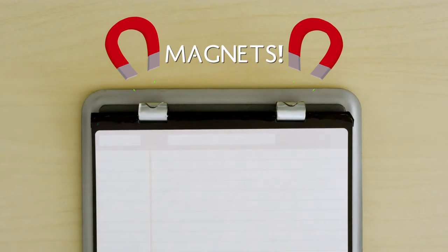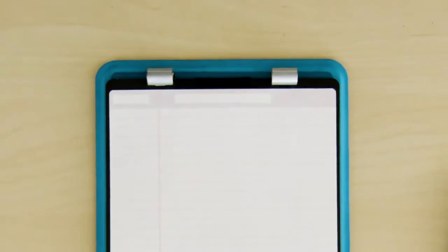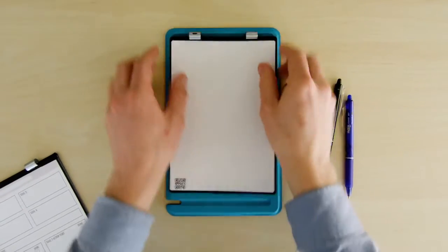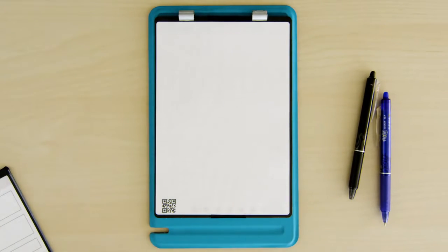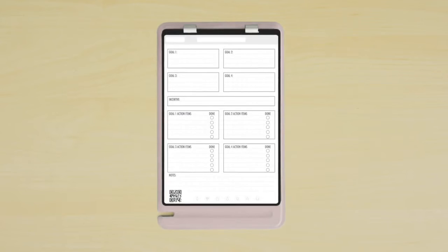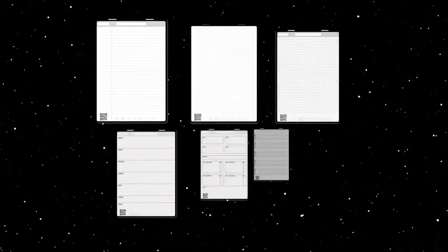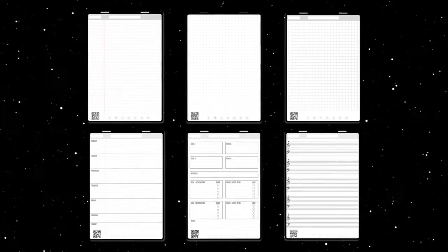So you can flip to the next page and keep things tidy or reverse the page pack over to switch from lines to dot grid. You can even swap in a whole new page pack so you always have the right pages for the right job. With multiple page packs and patterns to choose from, it's like magic for your note-taking.